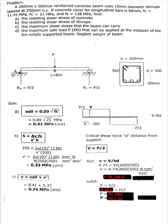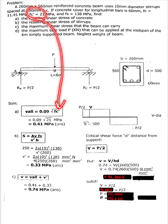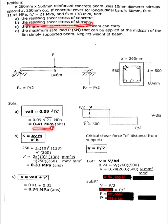For letter A, solve for the resisting shear stress of concrete. Shear stress v is equal to the shear force V divided by area. The allowable shear stress of concrete is v = 0.09 times the square root of fc prime. Given fc prime is 21, therefore v allowable equals 0.41 MPa.